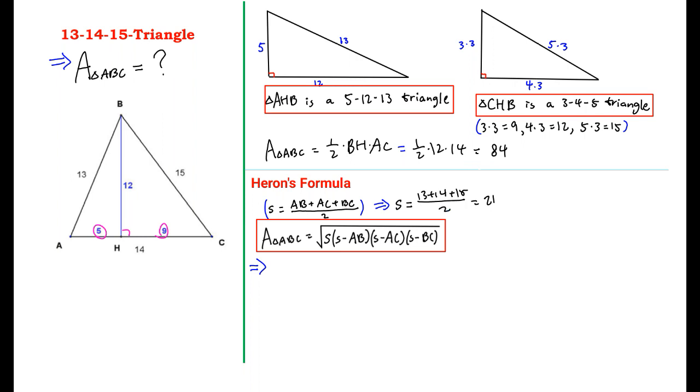So putting the values of S and triangle AB, AC, and BC, the area of triangle ABC is equal to square root of [21 times (21 minus 13) times (21 minus 14) times (21 minus 15)].